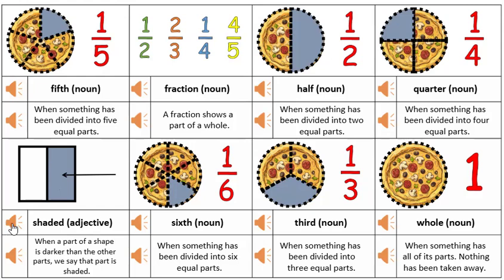Shaded: when a part of a shape is darker than the other parts, we say that part is shaded. Sixth: when something has been divided into six equal parts.